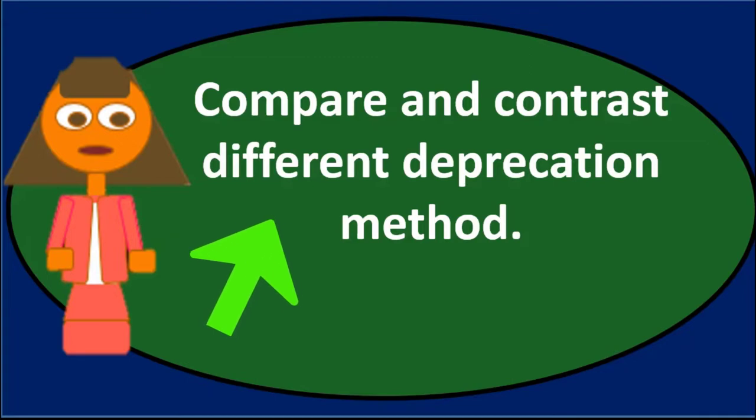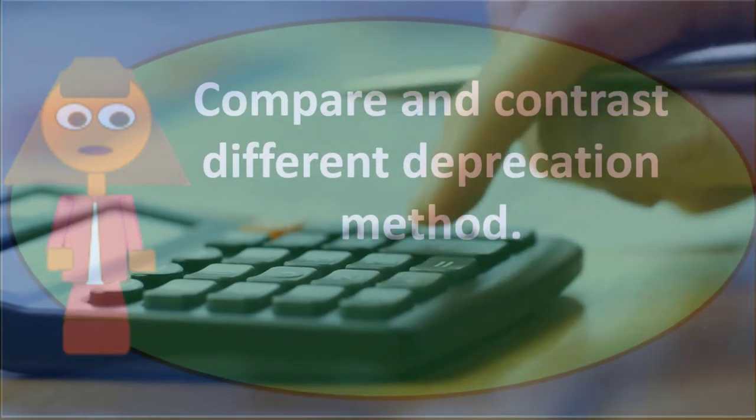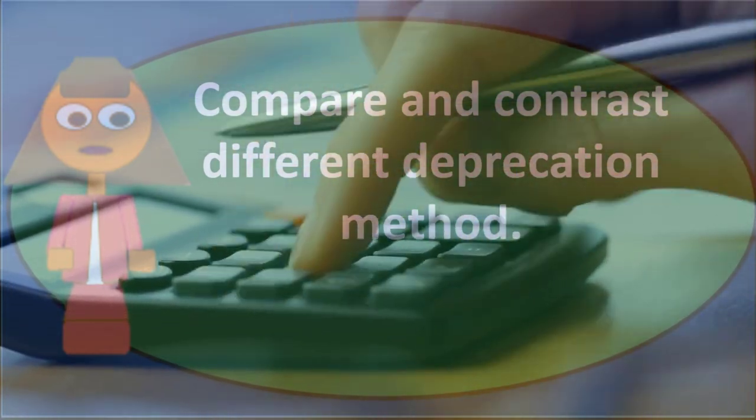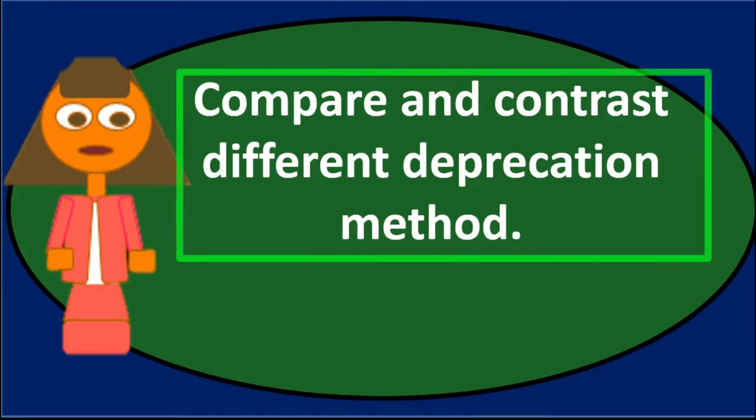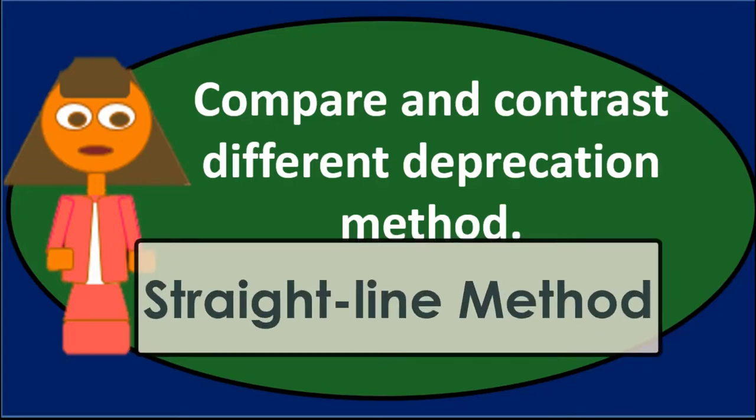So one way we can do that is we can just say, why don't I just take the cost of the equipment divided by the useful life, and then we'll just expense an even amount over the time periods. And that's what most people would think of if we were just going to try to figure this out. And that would be a straight line method.